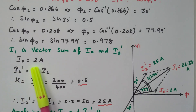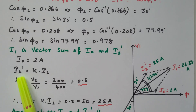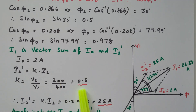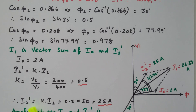I0 is 2 ampere. We need to find I2 dash, where I2 dash = k × I2. The transformation ratio k = V2/V1 = 200/400 = 0.5. I2 is given as 50 ampere, so I2 dash = 0.5 × 50 = 25 ampere. I2 is the current flowing through the secondary; I2 dash is the corresponding current flowing in the primary due to the loading of the secondary.